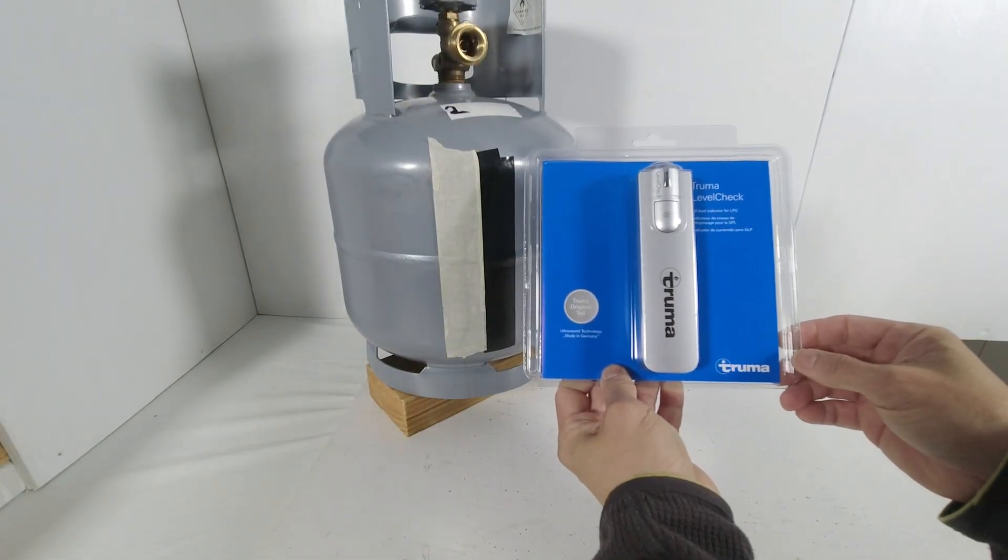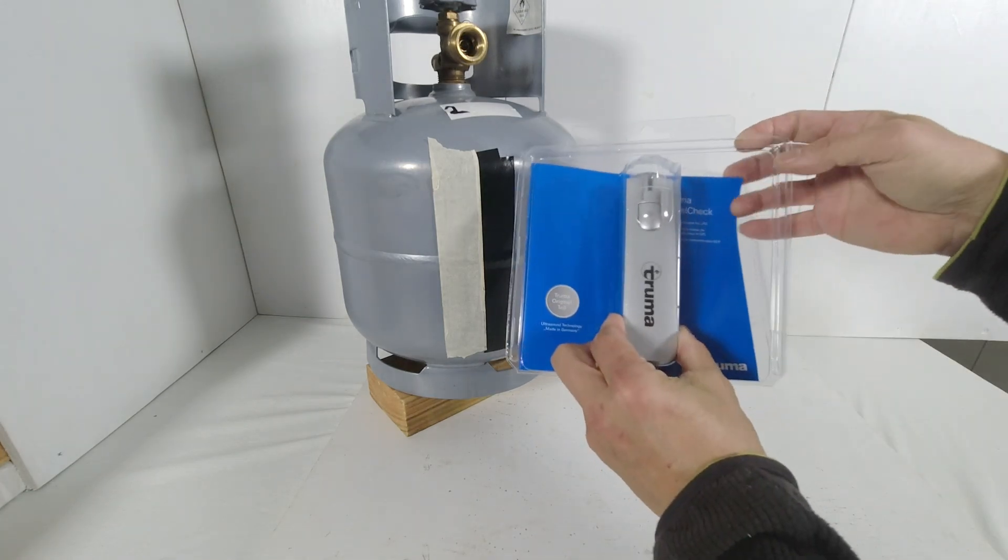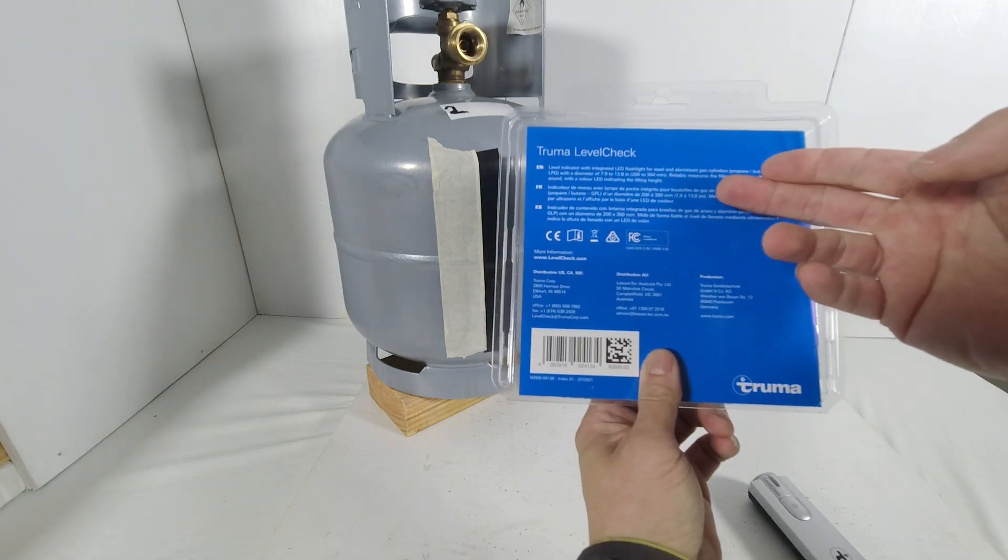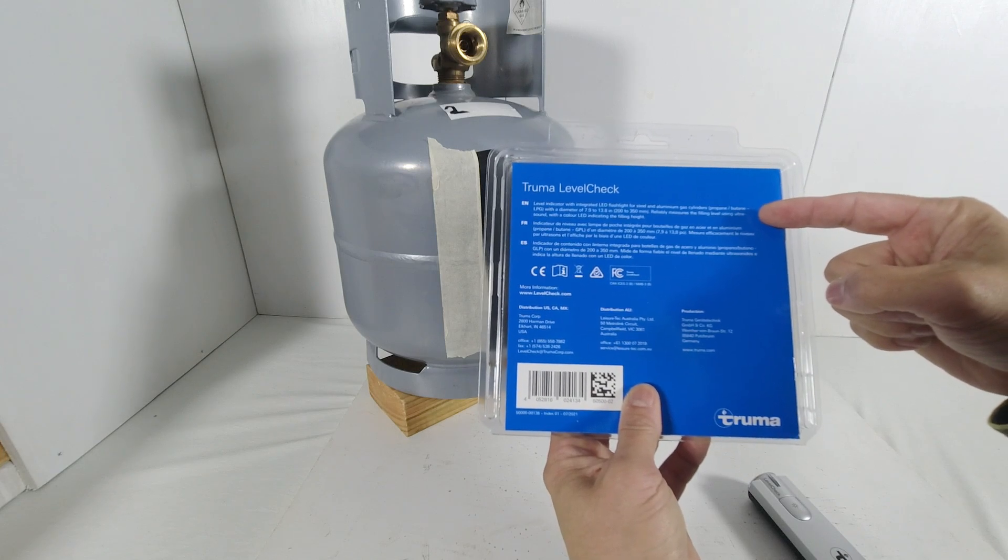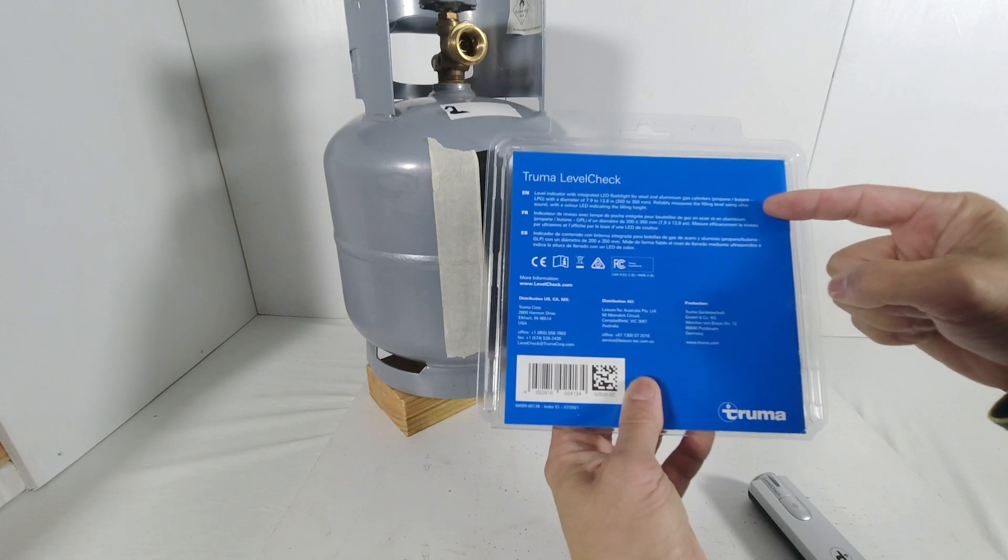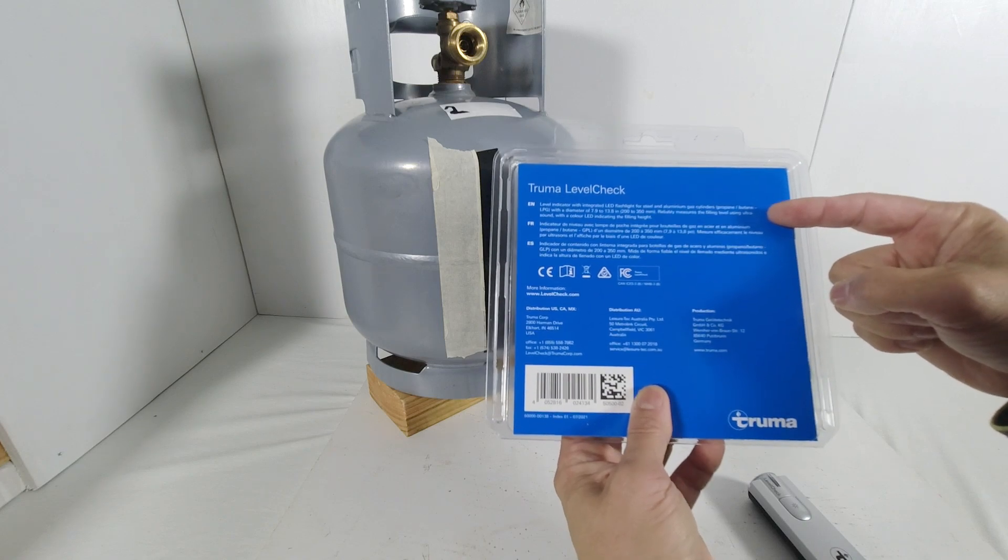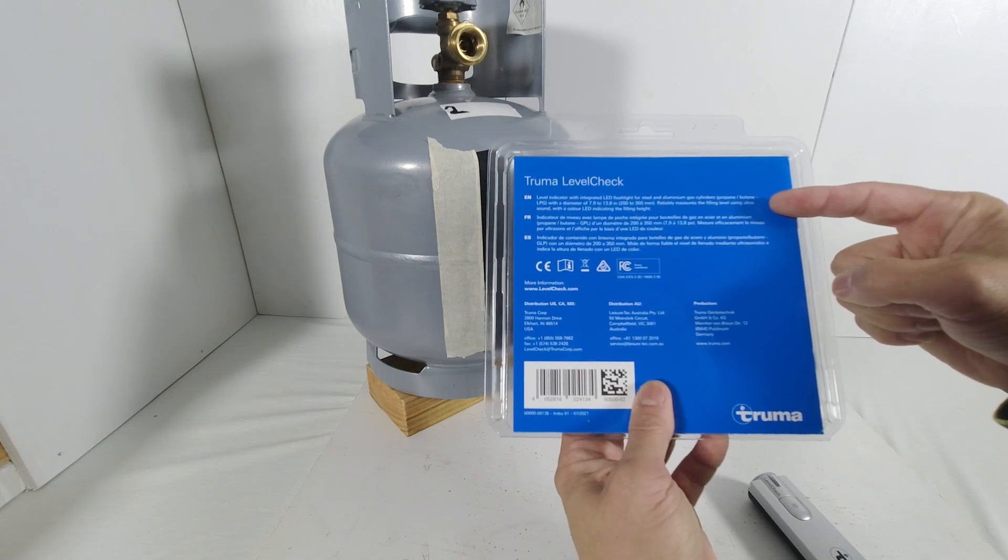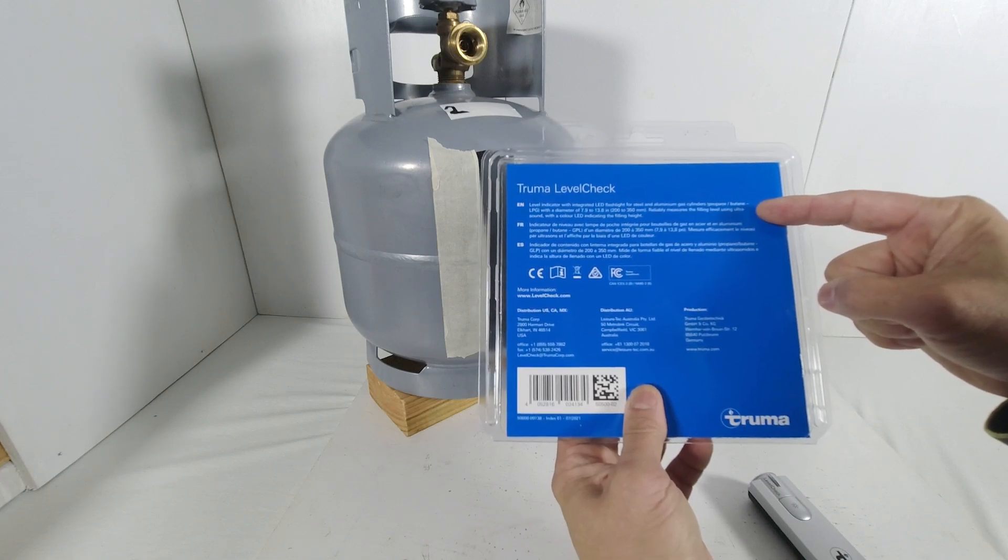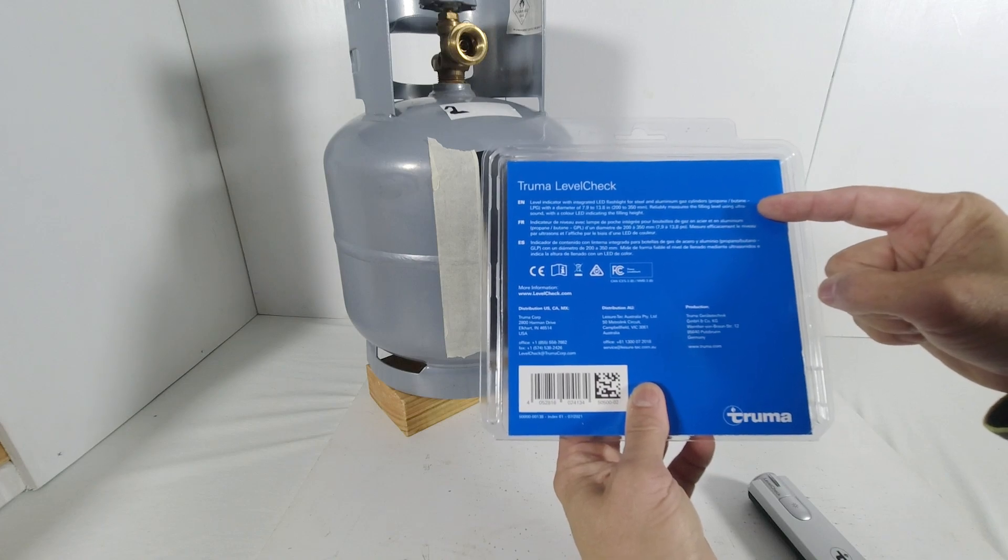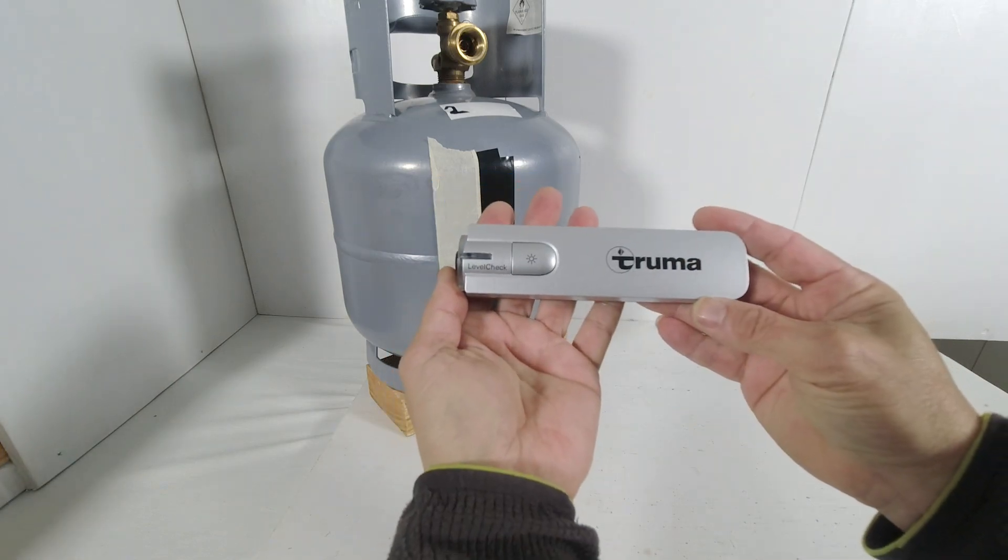We next test the Truma gas level checker. Truma is a company based in Europe. On the back of the packaging, there's instructions on its use. It's a level indicator with integrated LED flashlight for steel and aluminum gas cylinders, propane butane LPG with a diameter of 7.9 to 13.8 inches, which is 200 to 350 millimeters. It reliably measures the filling level using ultrasound with a color LED indicating the filling height. This product is made in Germany. Here is the Truma gas level checker.